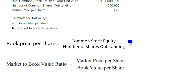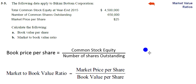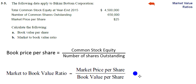We then take that and put it in the denominator under our market price per share, which we're given is $25. That gives us our market-to-book value ratio. We would like to see that ratio high, because a high ratio tells us that shares are selling in the market for higher than the book value. In this case, dividing $25 by $6.92 gives us a ratio of about 3-point-something.